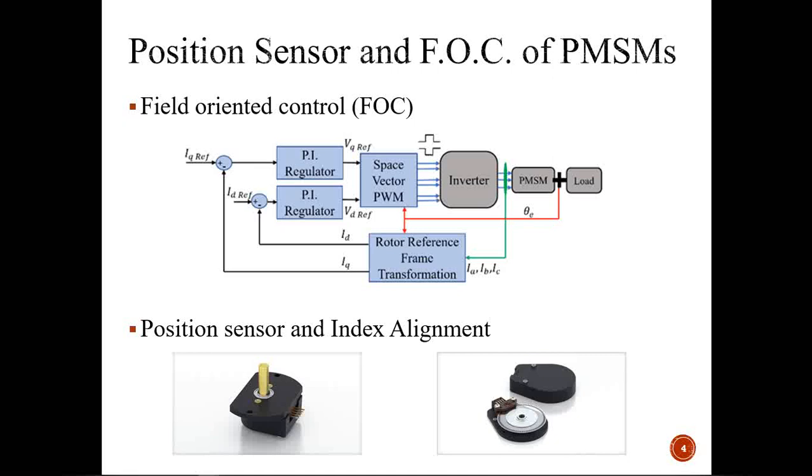In order to measure or identify this alignment, we use position sensors, and those position sensors have an index that will indicate your zero location. This position sensor is mechanically mounted, whether it's an encoder, resolver, or hall sensor. When mounting the sensor, you need to be very careful about this index alignment with the rotor zero.